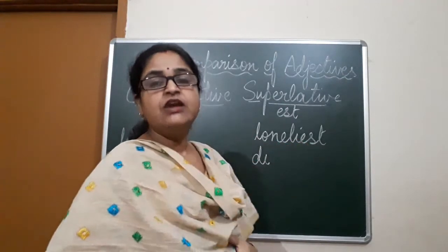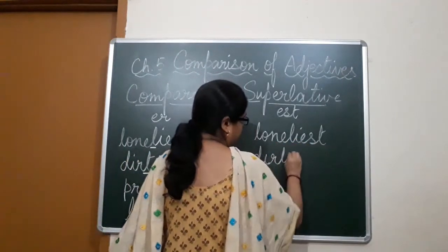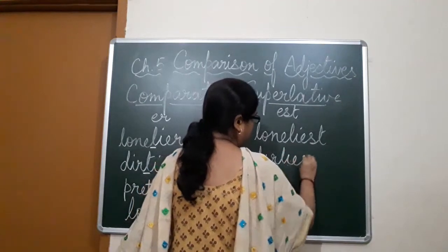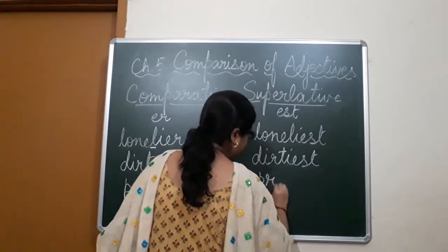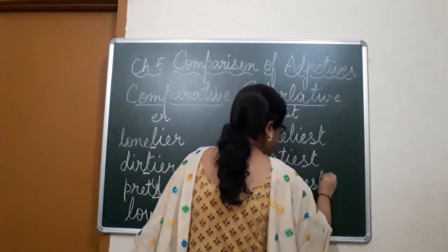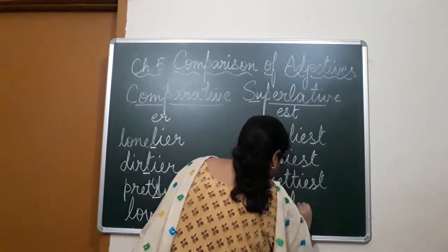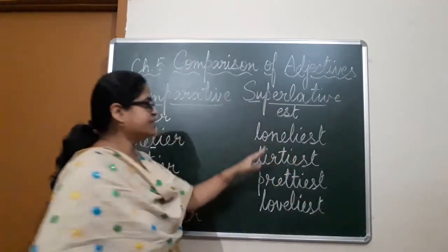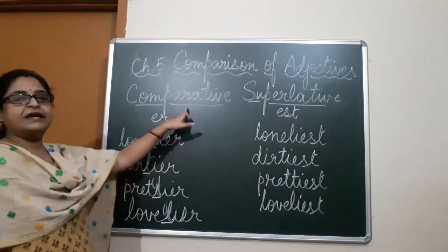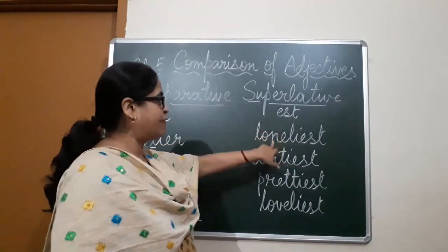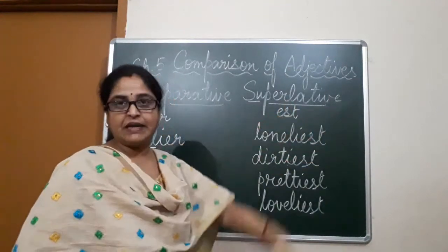I hope that is very clear. Pretty becomes prettier and prettiest. Lovely becomes lovelier and loveliest. As you can see, I have removed the Y and added I-E-R to make the comparative adjective, and removed Y and added I-E-S-T to make the superlative adjective.